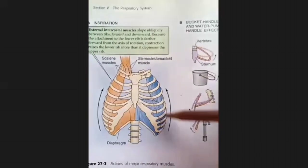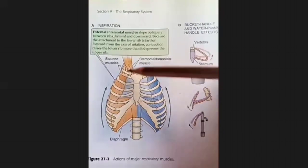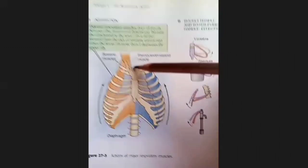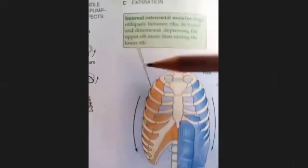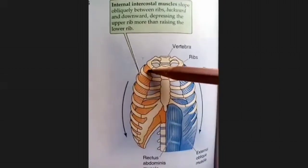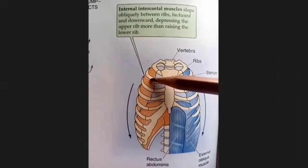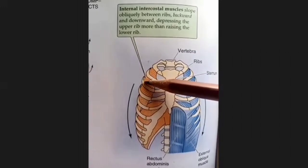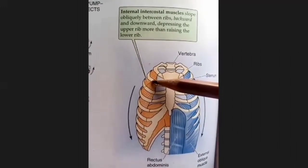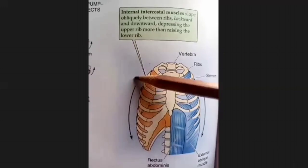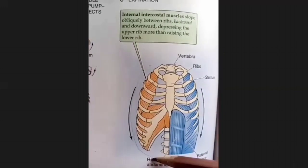And then we have the diaphragm — when the diaphragm flattens, the vertical diameter will change. After that we move to expiration. In expiration, we now look at the internal intercostal muscles, whose fibers run downward and backward. They will pull the upper ribs downward and the rib cage will collapse down and inside.